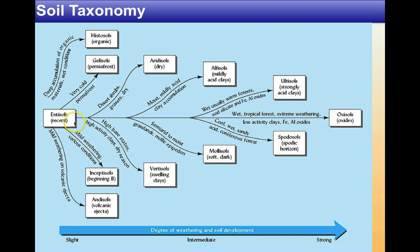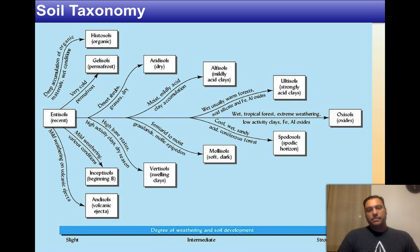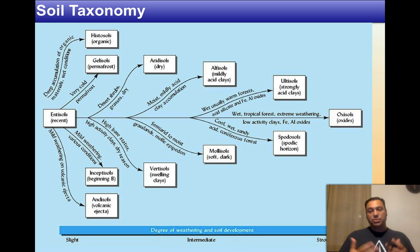Mollisols are in the intermediate range — usually in grasslands, semi-arid to moist. Alfisols are similar but on the other side, with mostly mildly acidic clay accumulation. You can see how these soil types arise from the development of diagenesis and the breakdown of igneous, metamorphic, and sedimentary rocks.